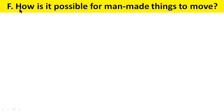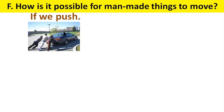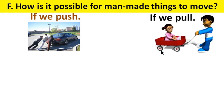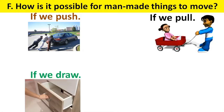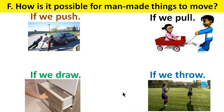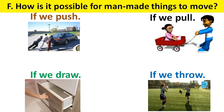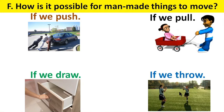Question number F. How is it possible for manmade things to move? If we push manmade things, it is possible to move. If we pull manmade things, it is possible to move. If we draw or throw — if we draw a dryer, it can move; if we throw a ball, it can move.